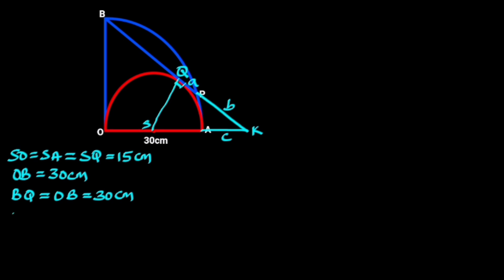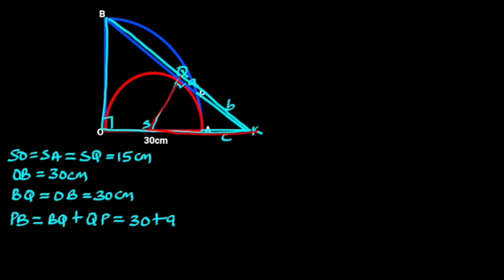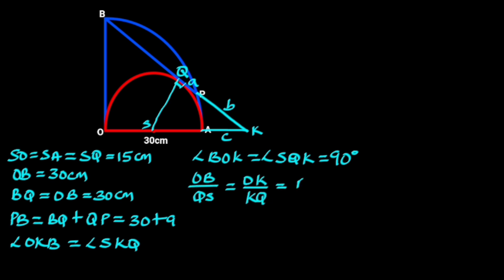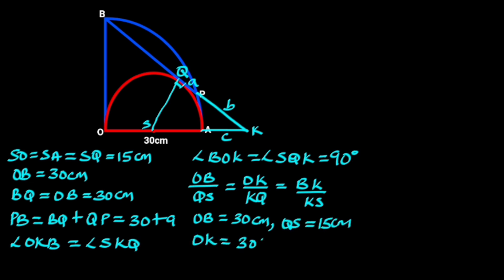The length of chord PB equals BQ plus QP, which is the same as 30 plus a. Considering triangles BOK and QSK, notice that both triangles are similar because angle OKB equals angle SKQ (common angle for both triangles), and angle BOK equals angle SQK, which is 90 degrees. From similar triangles: OB over QS equals OK over KQ, which also equals BK over KS. OB equals 30, QS equals 15, OK equals 30 plus c, KQ equals a plus b, BK equals 30 plus a plus b, and KS equals 15 plus c.